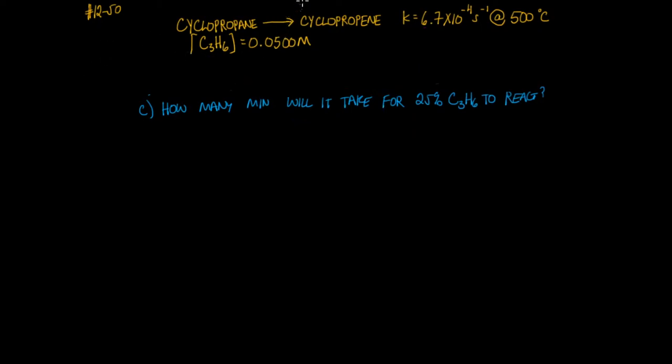Problem 50 part C. Again, we're given this reaction. The rate constant is provided. We know it's a first order reaction. And the initial concentration of C3H6 or cyclopropane is 0.0500 molar. And we're asked how many minutes will it take for 25% of the starting material to react. So it's an issue of semantics.